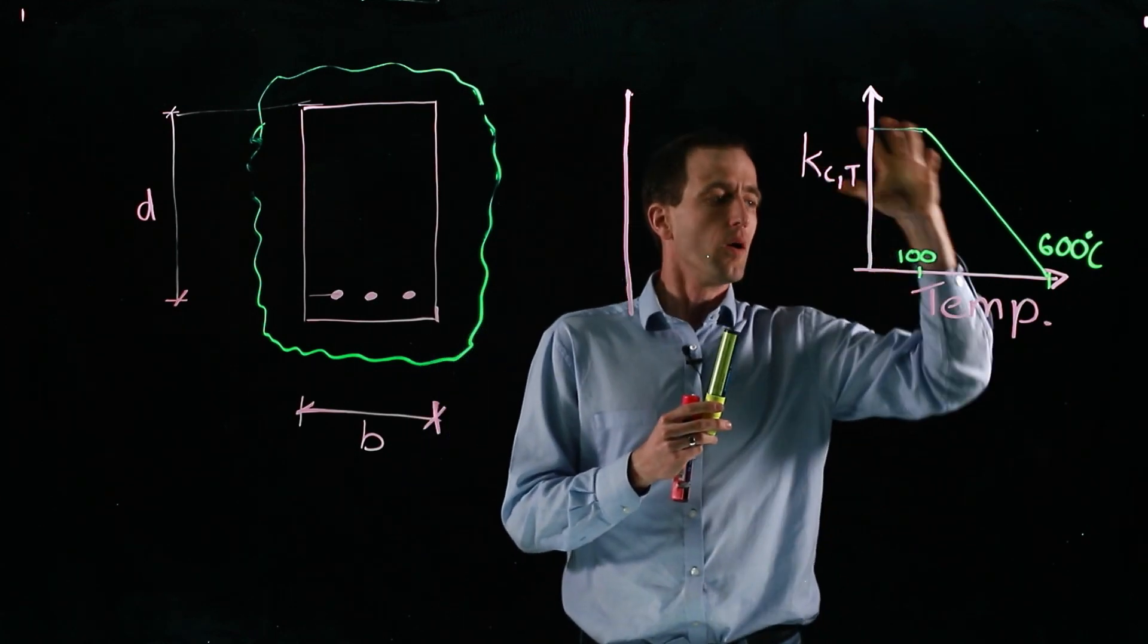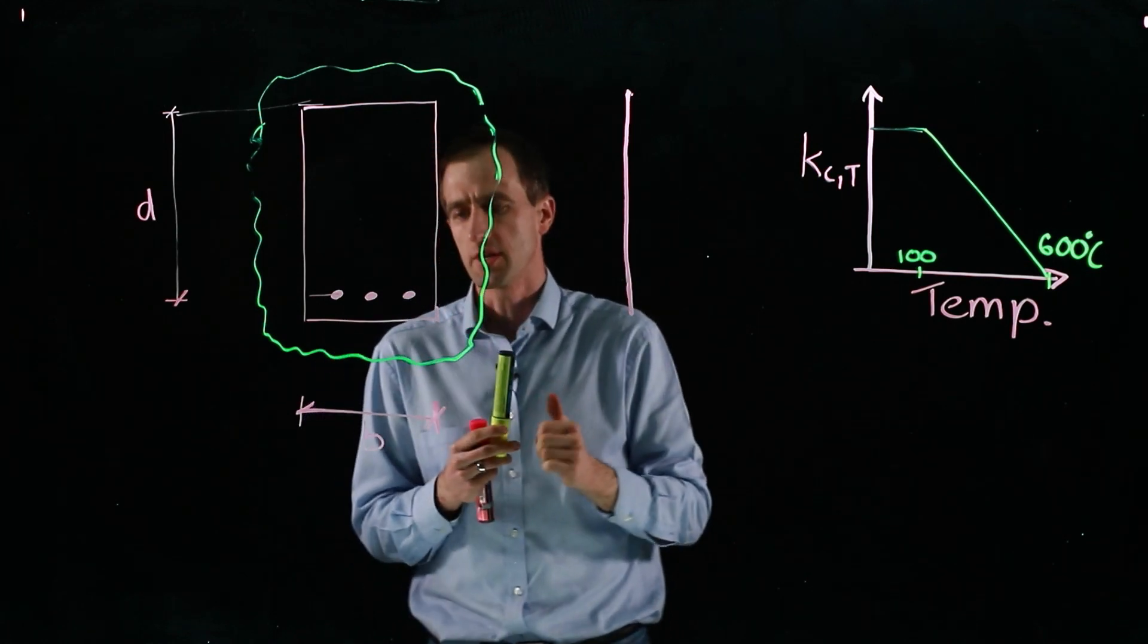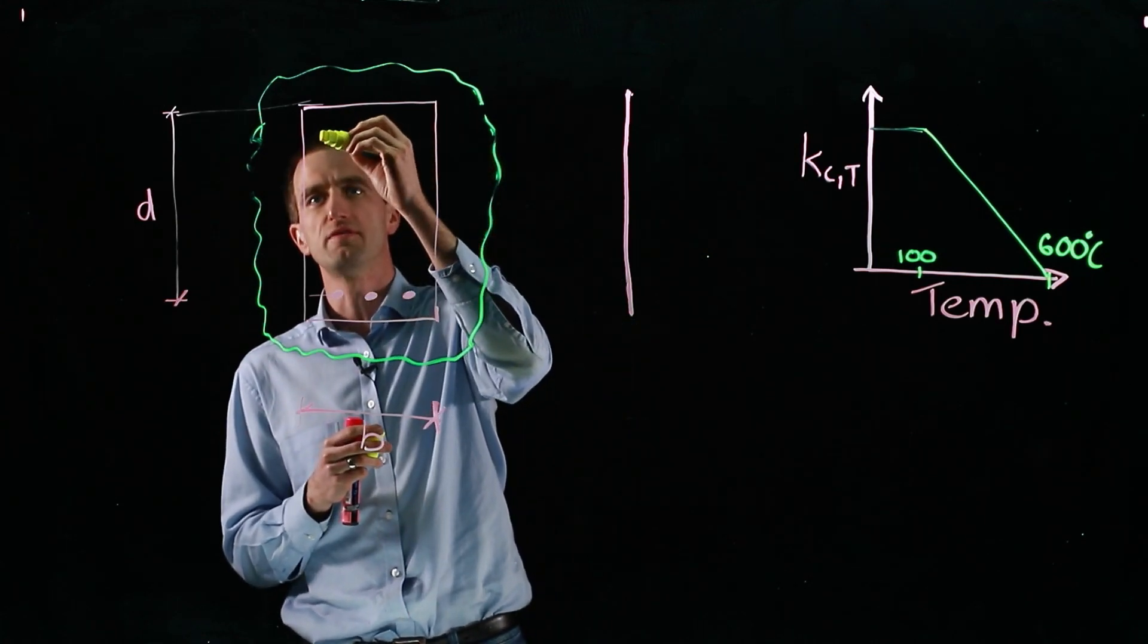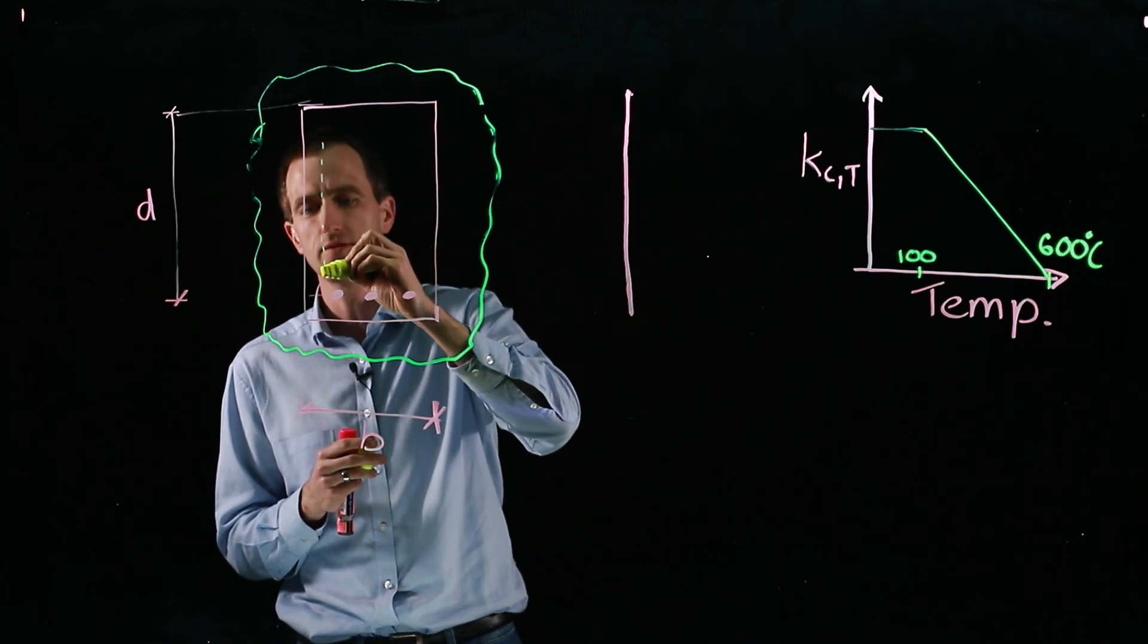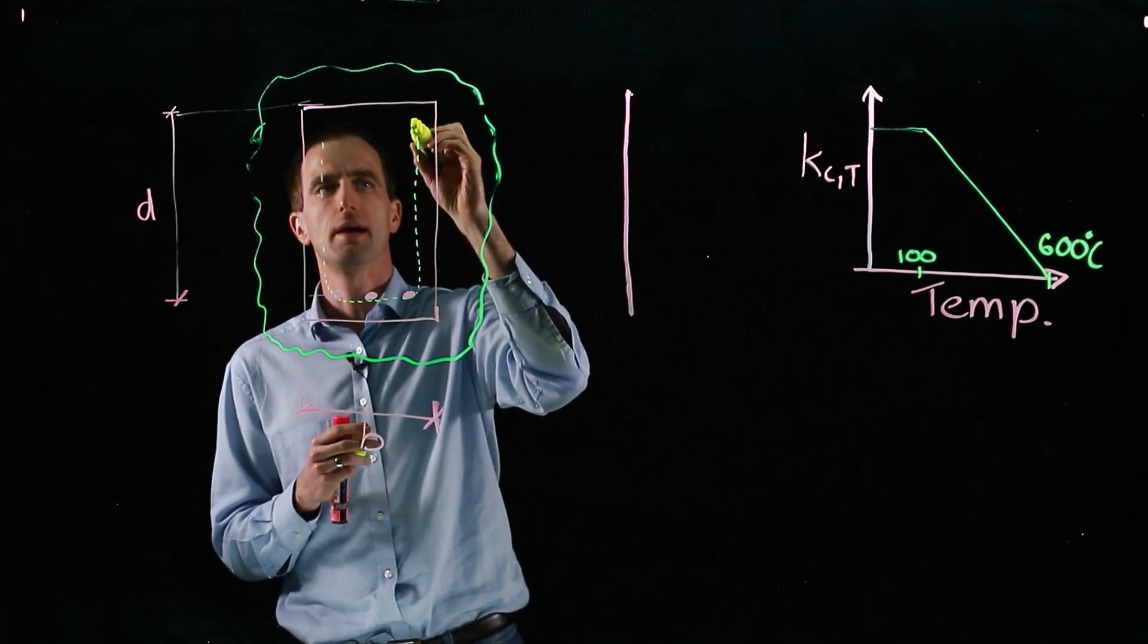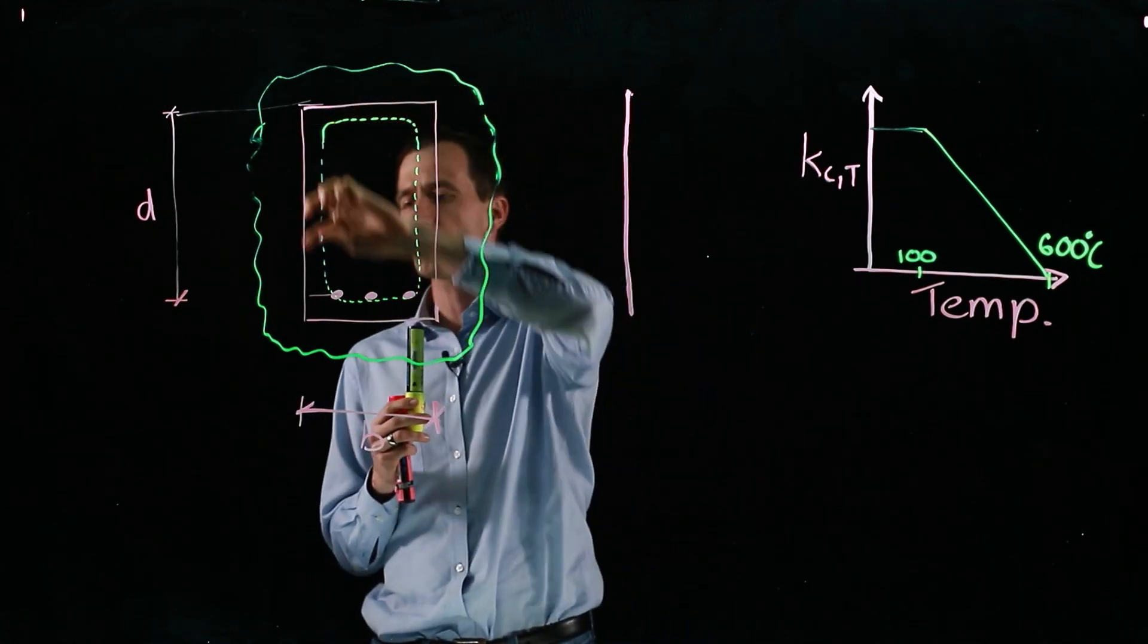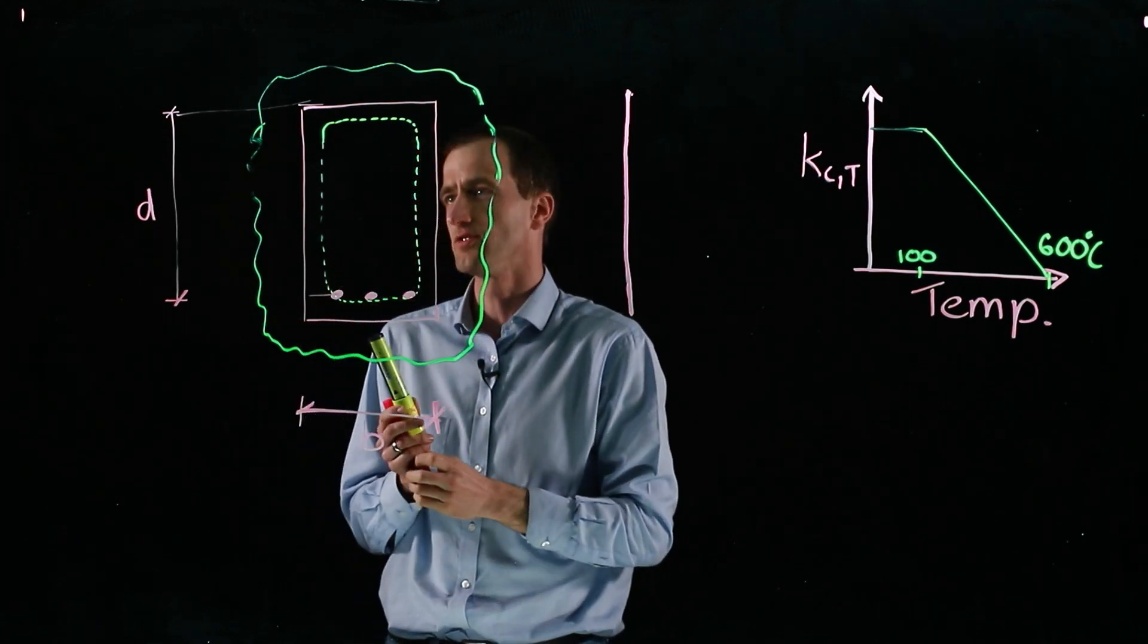We've got a way of approximating that on a cross section, because it's very difficult to track the strength through the whole section depth. So a simplified method is to track what's called the 500 degrees Celsius isotherm. We assume everything outside of 500 degrees Celsius has no strength. So we lose area all the way around the outside, and then everything inside of that has its full strength.